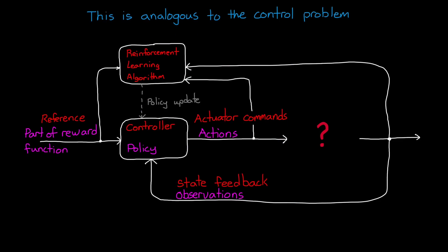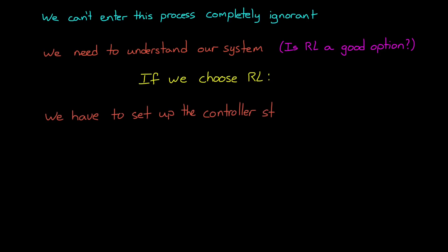Now, even with the learning algorithm doing most of the work for us, we can't enter this process completely ignorant. We have to know several things before we start. And the first is that we need to understand our system that we're trying to control, and determine whether it's better to solve the problem with traditional control techniques, or with reinforcement learning. And if we choose the learning path, then we need to set up the policy so that it has enough parameters, and in the right structure, so that it can be tweaked successfully. It won't do us any good if we're hoping to control a multi-dimensional system, but only give it a single parameter.